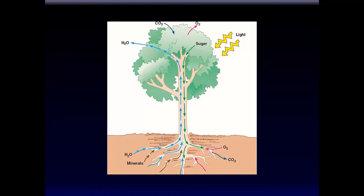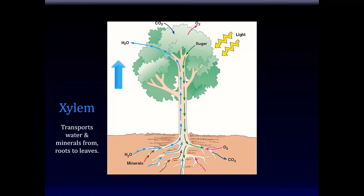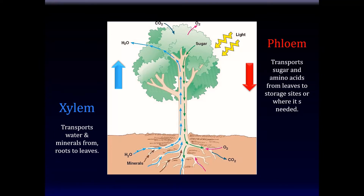It is this highway system that constitutes the circulatory system of the plant. The highway that transports water and minerals from the ground and roots to all parts of the tree is called the xylem. The highway that transports sugars and amino acids from leaves to different storage sites is called the phloem.